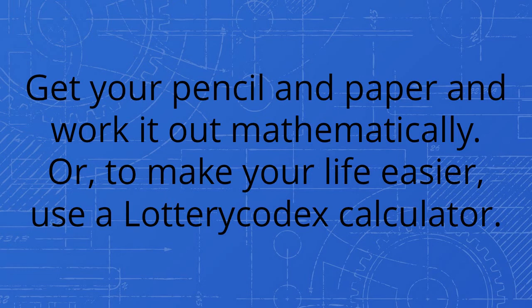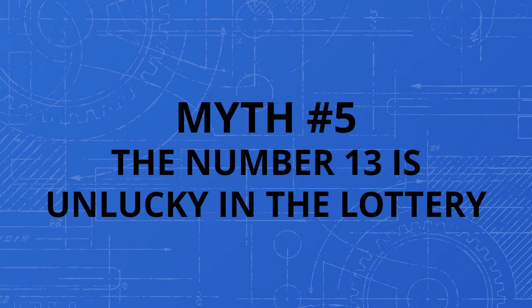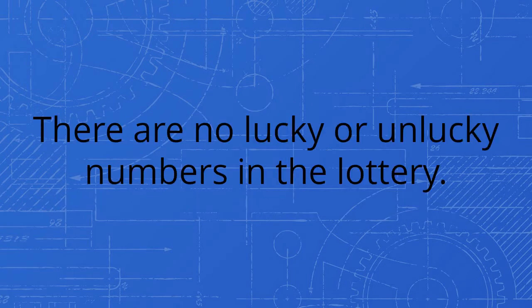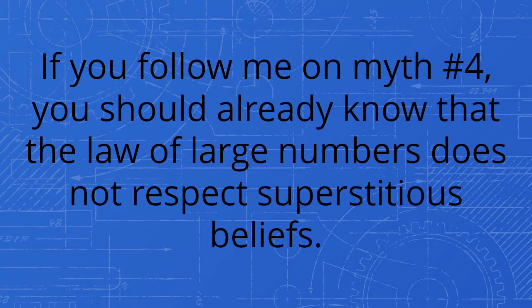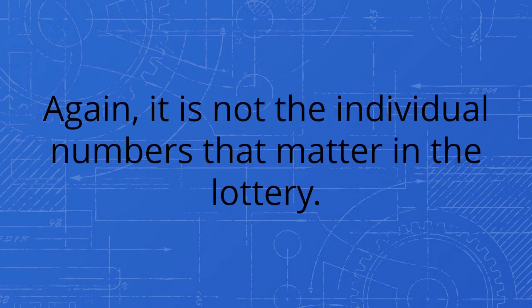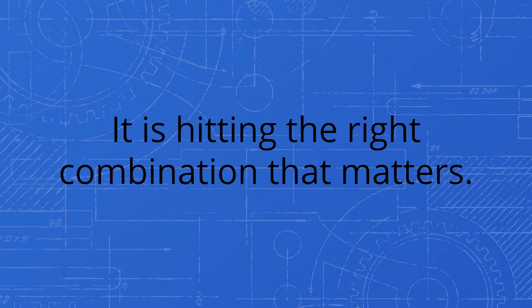Myth number five: the number 13 is unlucky in the lottery. There are no lucky or unlucky numbers in the lottery. All numbers have the same theoretical probability, and therefore the only way to increase your chances is to understand how the lottery works from the probability standpoint. If you follow me on myth number four, you should already know that the law of large numbers does not respect superstitious beliefs. Again, it is not the individual numbers that matter in the lottery. It is hitting the right combination that matters. But again, if you want to be lucky, make some calculations or use a lottery codex calculator.